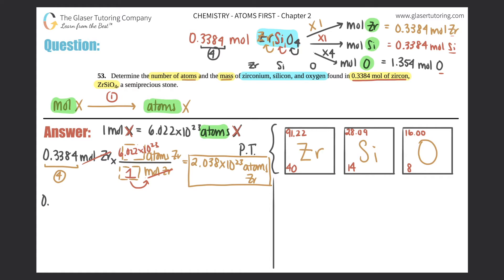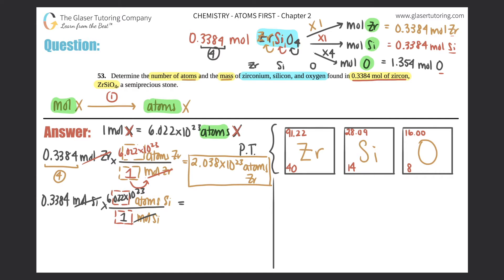Now for silicon: 0.3384 moles of Si — moles of Si on the bottom, atoms of Si on top. One mole equals Avogadro's number, 6.022 × 10²³. Moles of Si cancel out, and since the moles value is the same as zirconium, you get the same answer: 2.038 × 10²³ atoms of Si.